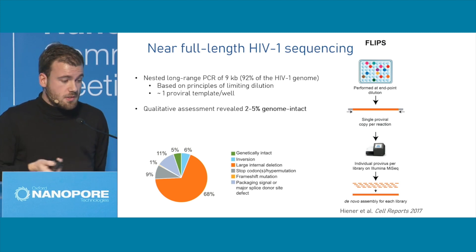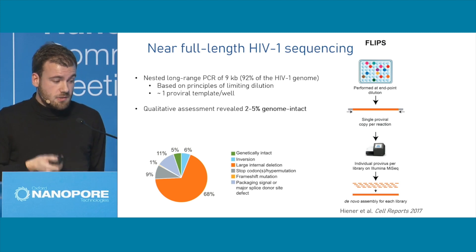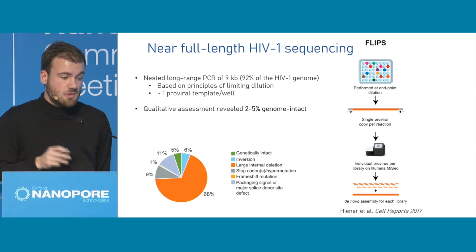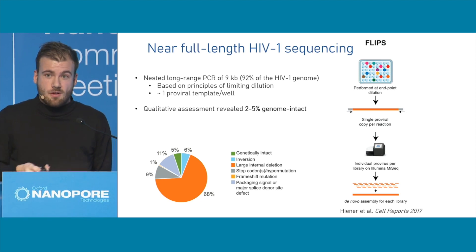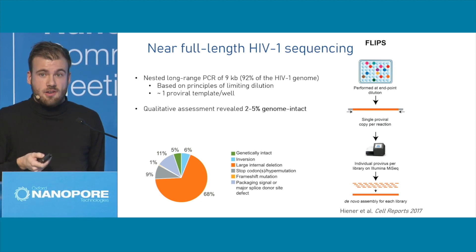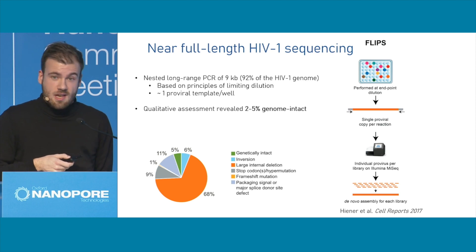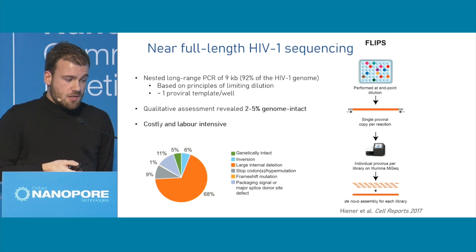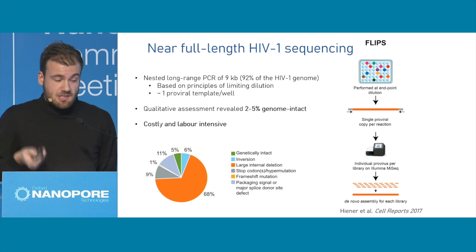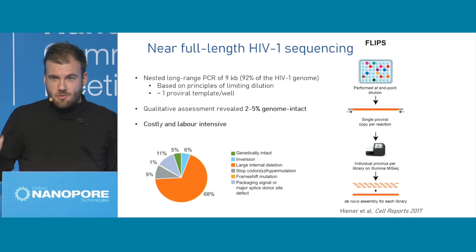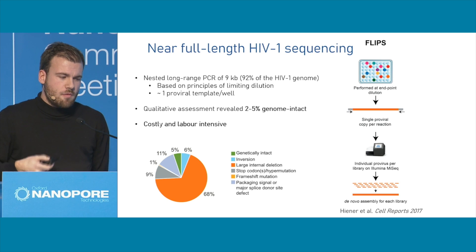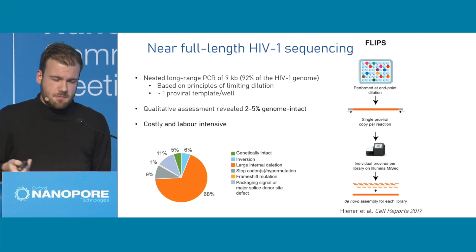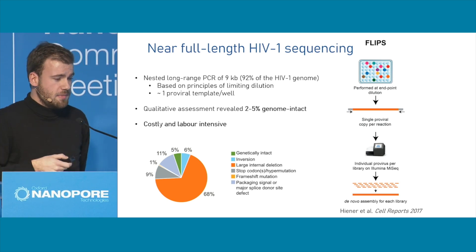It's a very laborious, very hard, and very expensive way of doing things. But this has shown us some interesting things — we actually know now that around 2% to 5% of those HIV-infected cells are carrying a genome-intact sequence. So it's very costly and very labor intensive. That's why we turned to long-read sequencing, to find a way to overcome this laboriousness and overcome the principles of limiting dilution.